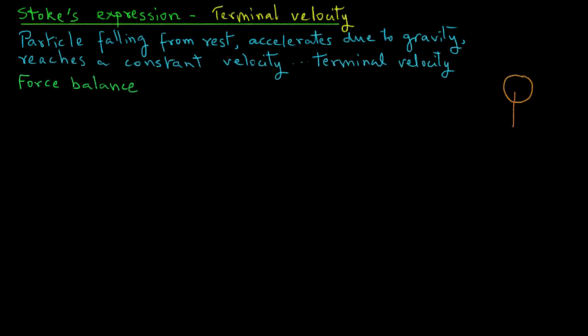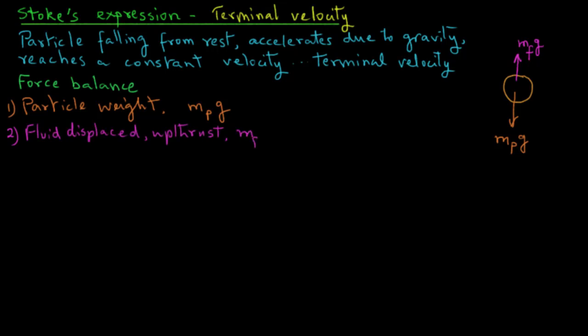The first force is particle weight, and we express that with the mass of the particle MP times the acceleration due to gravity, G. The second force is due to the fluid that is displaced, and that upthrust force is mass of that fluid that is displaced times G. Another force here is the drag force that acts against the particle weight, and we use the symbol F.